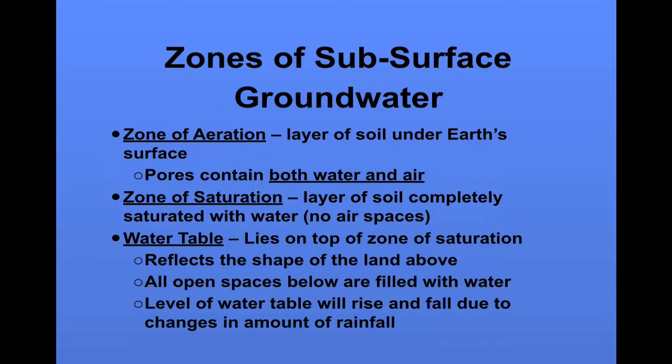Here are a couple of terms explained. The zone of aeration is a layer of soil under the surface where the pores contain both water and air. The zone of saturation is where the soil is completely saturated with water. The water table sits on top of the zone of saturation and reflects the topography of the land.